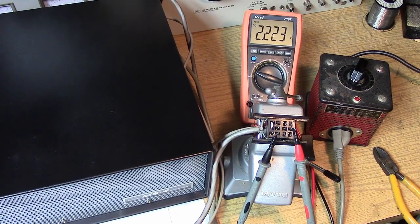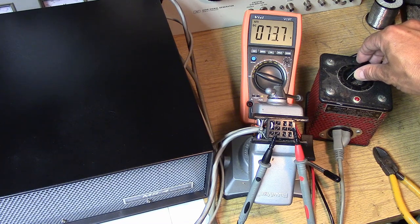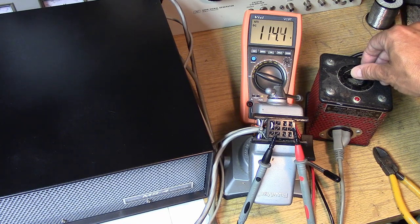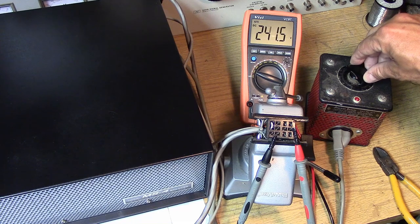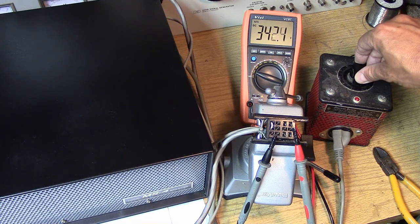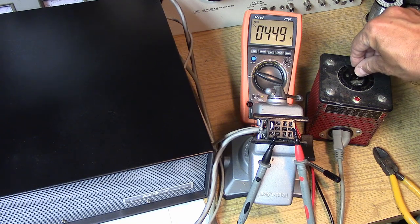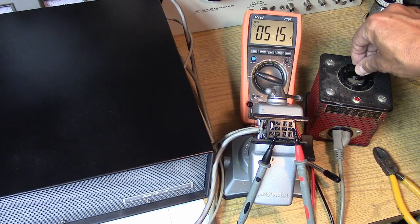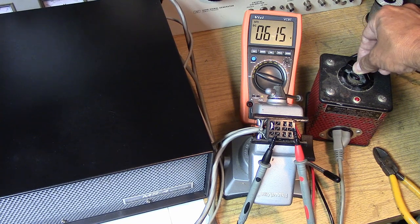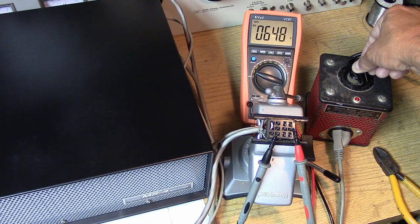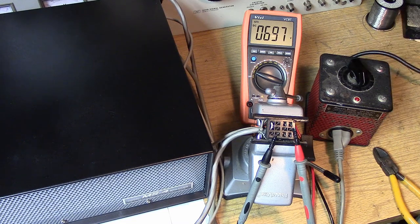So a good test of this system would be to increase the variac slowly. We can see the high voltage is coming up. Take this all the way up. Hopefully the meter will take 650 volts without exploding. It actually will be a little higher because it doesn't have a load. Keep going up. And there we are at almost 700 volts.